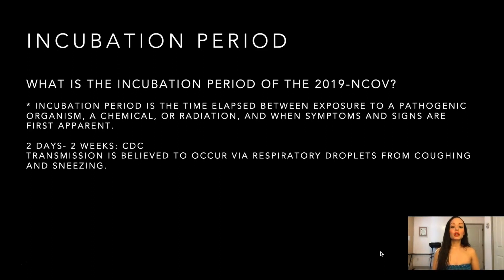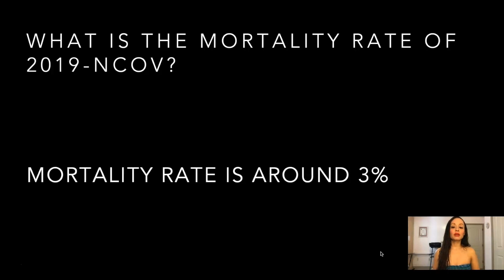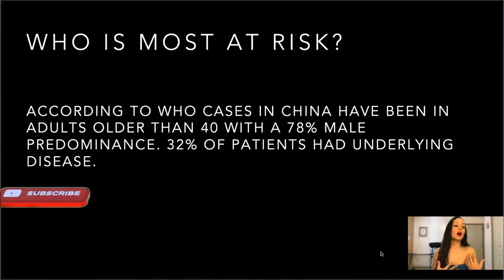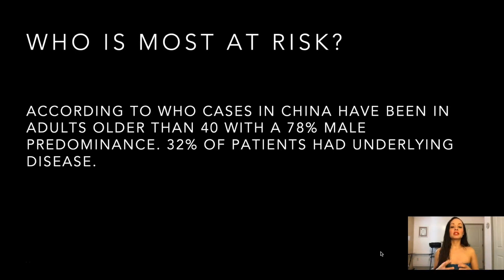Transmission is believed to occur via respiratory droplets from coughing and sneezing. The mortality rate of the 2019 Coronavirus is around 3%. According to the World Health Organization, cases in China have been in adults older than 40, with a 78% male predominance — males seem to be affected more by this virus than females. 32% of patients had an underlying disease or comorbidity, such as diabetes, COPD, or asthma, and because of their increased susceptibility, these patients are more affected.